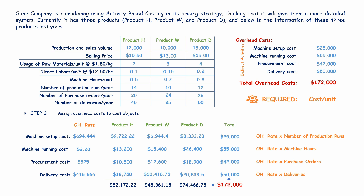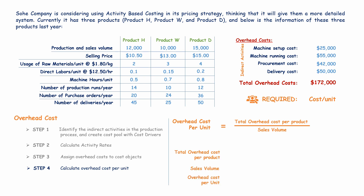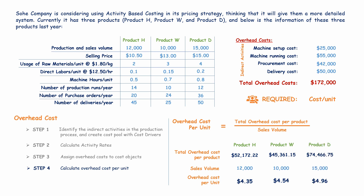Now that we have allocated the overhead costs, we calculate the overhead cost per unit by dividing the total overhead costs by the total number of products or sales volume. For product H, the overhead cost per unit is $4.35. For product W, it is $4.54. And for product D, it is $4.96.